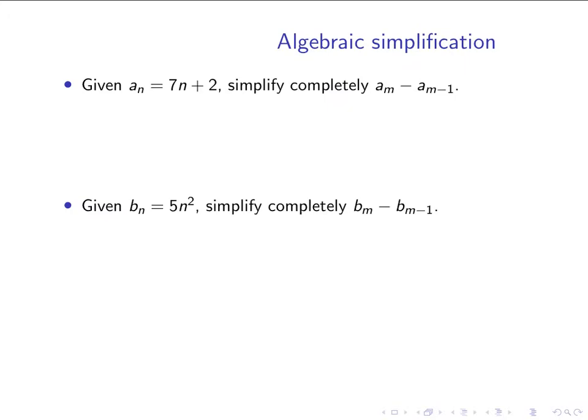For example, if I have a closed form for a sequence a_n equals 7n plus 2, I can simplify the expression a_m minus a_(m-1) by just using algebra rules. Let me go through the algebra real quick. If I plug in a_m, I'm simply putting the subscript m in place of n in this formula, and so I get 7m plus 2.